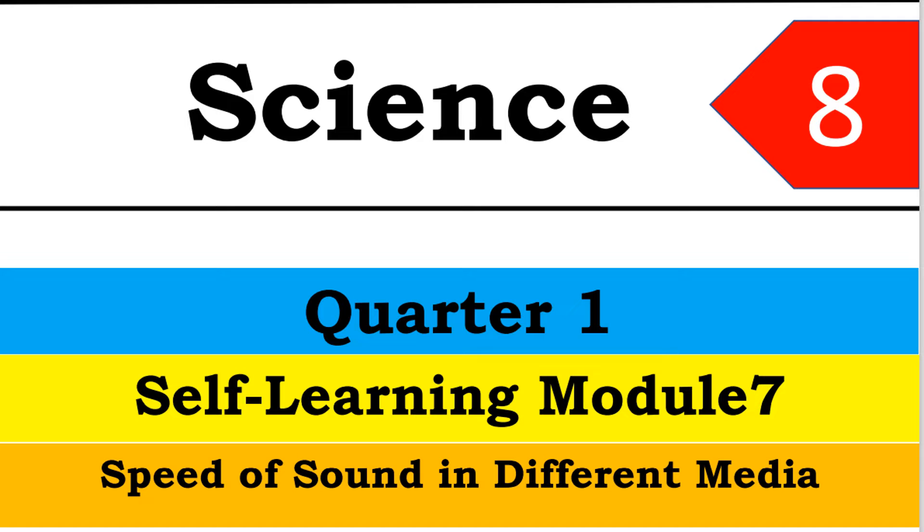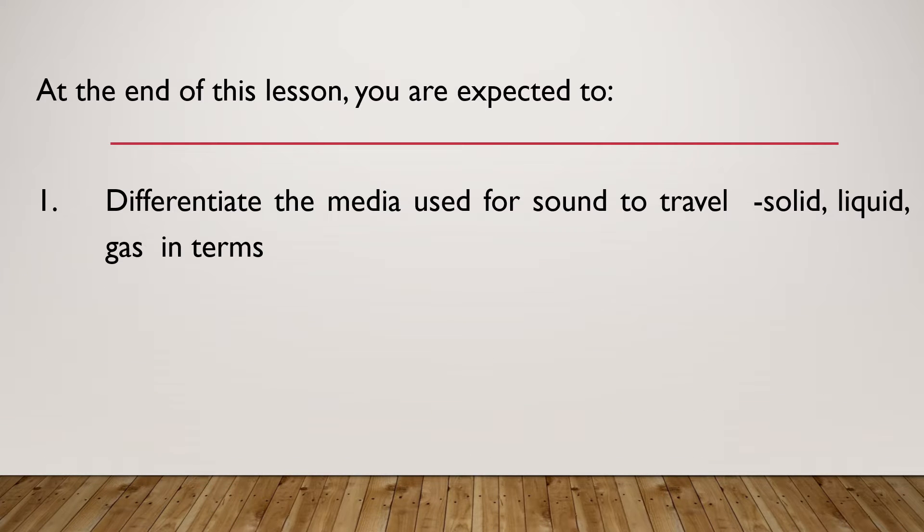Science 8. This is Self-Learning Module 7, all about the speed of sound in different media. And so, at the end of this lesson, you are expected to number 1: differentiate the media used for sound to travel - solid, liquid, gas - in terms of the movement of particles as sound passes through.